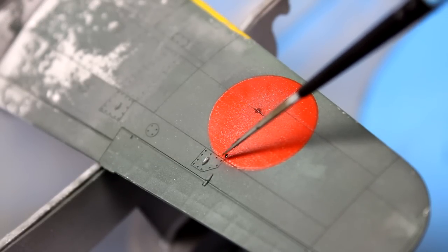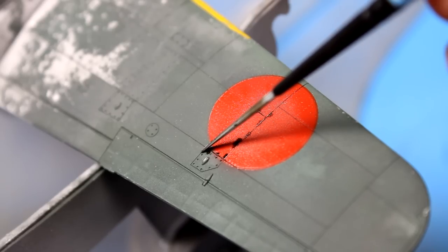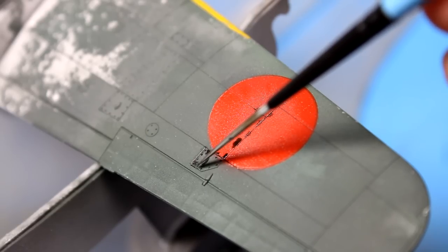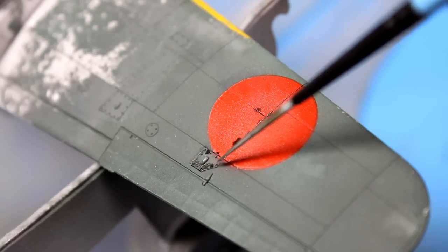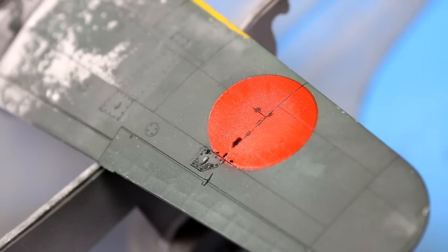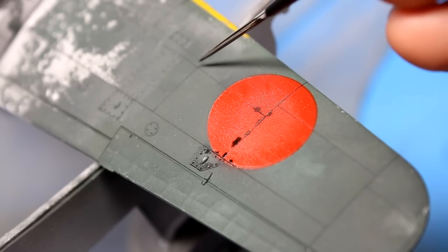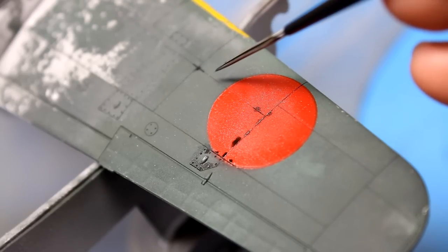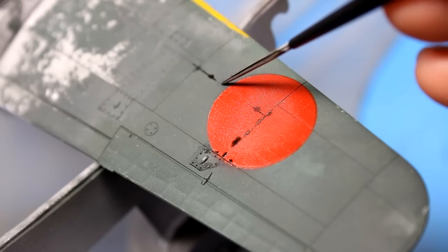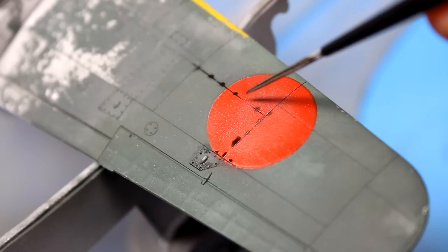As drastic as that sandwich shading looks paint-wise, as soon as you hit it with a pin wash, it tends to push it back quite a bit. So when weathering an aircraft model, you have to keep in mind how all of these layers are going to add up in the end and interact with each other. Because you might spend a lot of time in one area, and then have it completely nulled by another step further down the road.